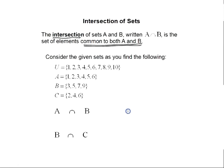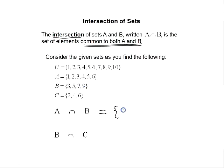Let's find the intersection of some sets. Let's find A intersect B. Set A is {1, 2, 3, 4, 5, 6} and set B is {3, 5, 7, 9}. We want the elements common to both A and B. The elements common to both sets A and B are three and five.